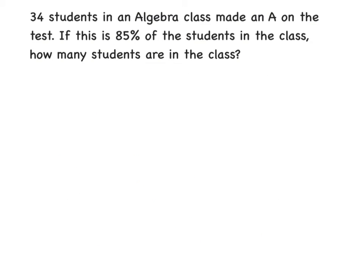Let's try another problem. 34 students in an algebra class made an A on the test. If this is 85% of the students in the class, how many students are in the class? Once again, we have to identify our parts. 34 students made an A, so that doesn't necessarily mean all of them. If this is 85% of the students, we are looking for the whole because they gave us a part.